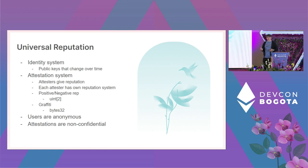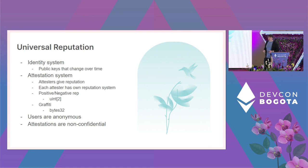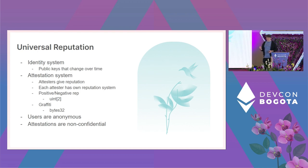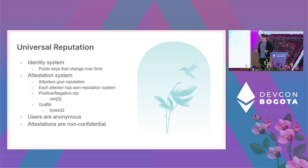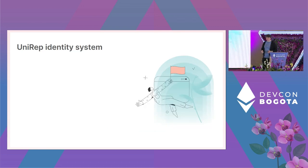A more complex example would be storing the state root of a Merkle tree inside the graffiti. The attester can extend the ZK proof system to prove things about the contents of that tree — for example, using an incremental Merkle tree to give achievements to users or track actions they've taken. It's a very extensible system. The two main properties of UniRep are anonymity and non-confidentiality: we can see everything happening in the system, but we don't know who's doing what.